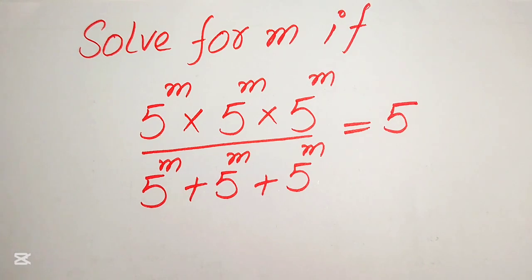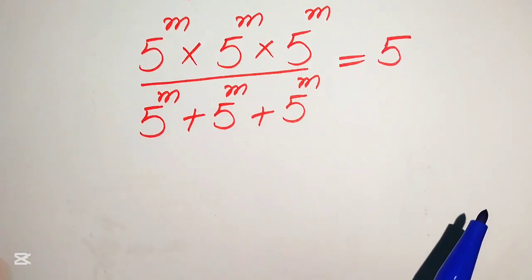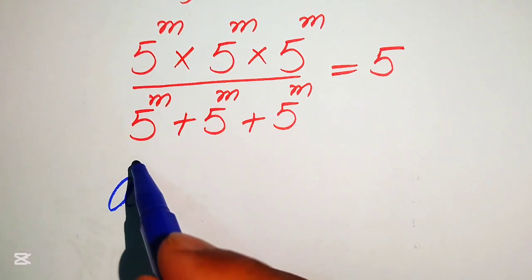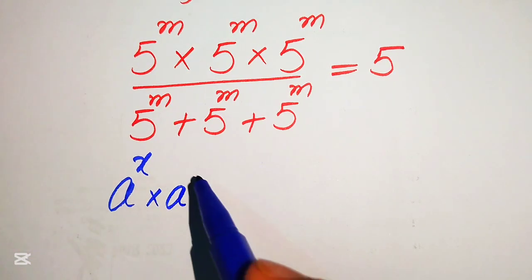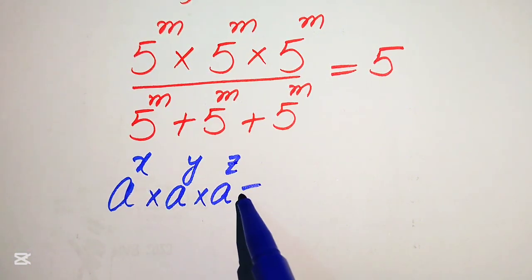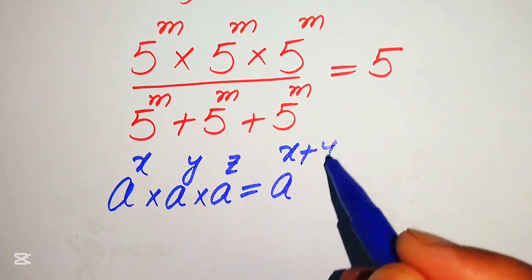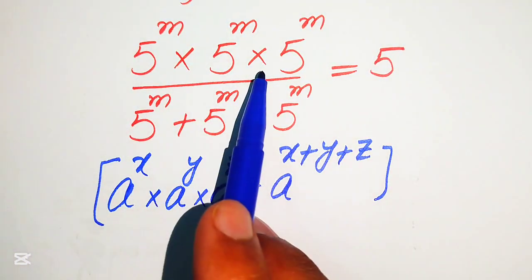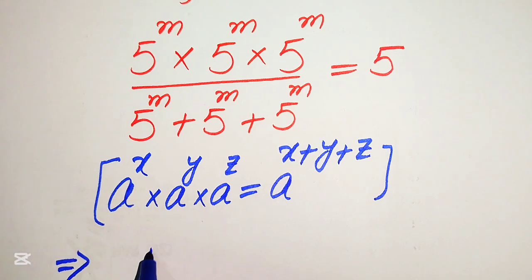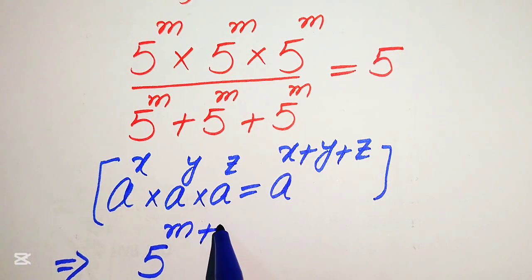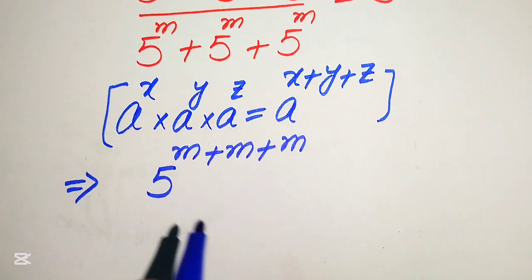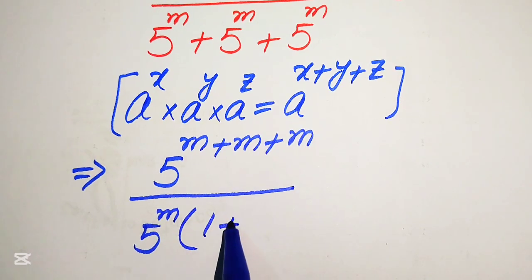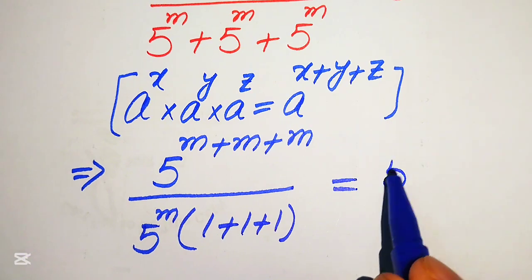We solve this problem for the value of m. In the next step we apply the exponent law: if you have a to the power of x multiplied by a to the power of y multiplied by a to the power of z, it equals a to the power of x plus y plus z. According to this rule we add all the exponents, giving 5 to the power of m plus m plus m, divided by 5 to the power of m into 1 plus 1 plus 1, and this equals 5.